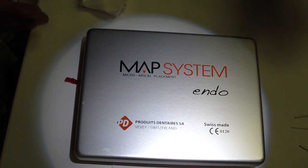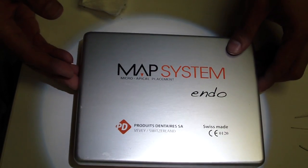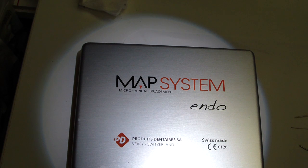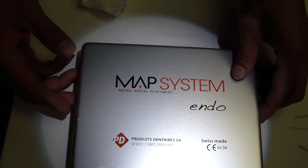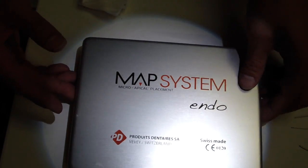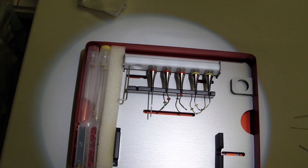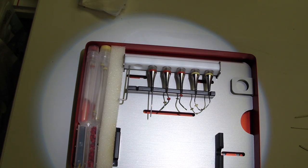The MAP system, micro-apical placement system. I placed MTA a number of times without this and I knew that this existed, but it was very difficult. This was made in Switzerland, and essentially it's a micro-amalgam carrier.